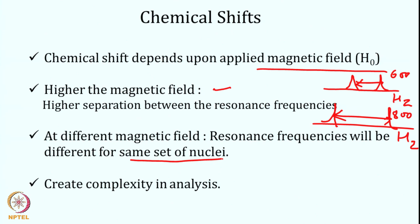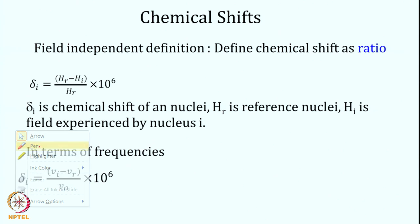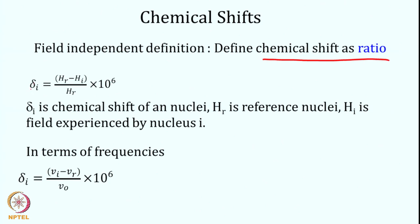This creates complexity in analysis. To remove this complexity, one needs to express chemical shift in a field-independent manner — by defining chemical shift as a ratio. The chemical shift delta of a particular nucleus is expressed as the difference between the reference field and the field at the nucleus of interest, divided by the reference frequency, multiplied by 10 to the power of 6 — that is, in parts per million.